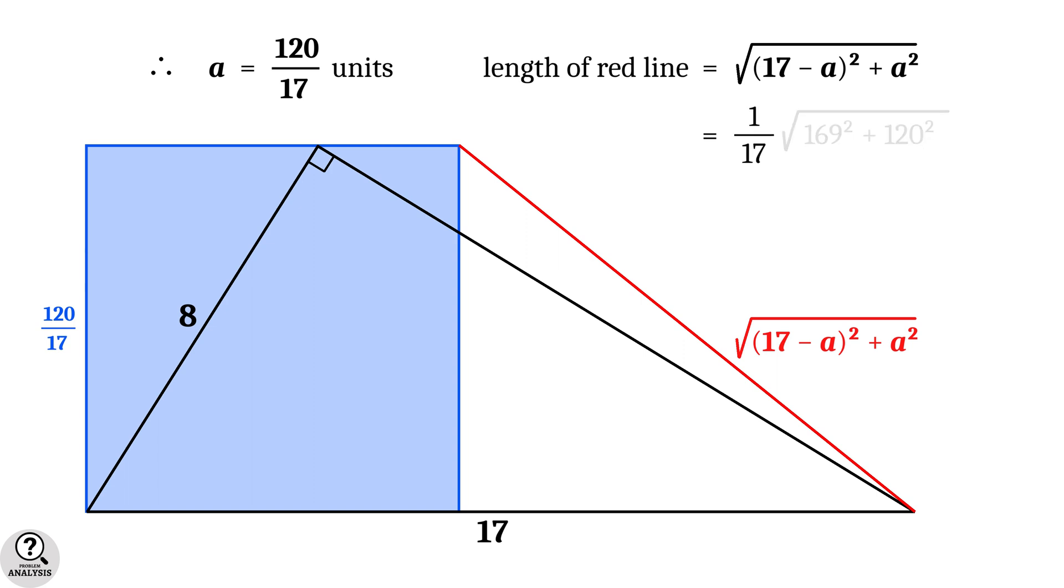This is equal to 1 by 17 into square root of 169 square plus 120 square, equal to 1 by 17 into square root of 42961. The number 42961 is a prime number. So we can leave this number as it is.